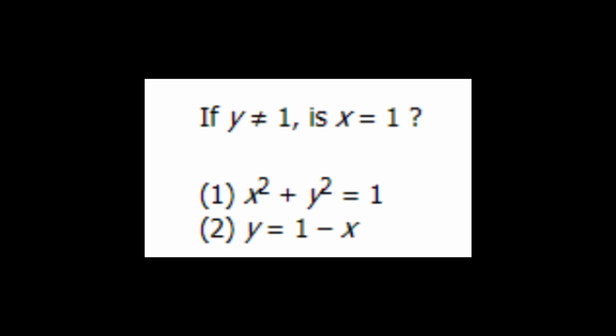With data sufficiency, if number one alone is sufficient to answer the question, then A is the answer. B is the answer if number two alone is sufficient. C is the answer if they are both not sufficient alone, but together they are sufficient. D is the answer if they are sufficient, each of them alone. And E is the answer if even together they are not sufficient.